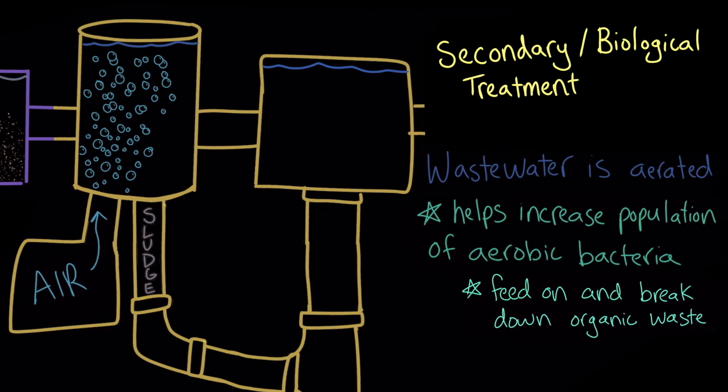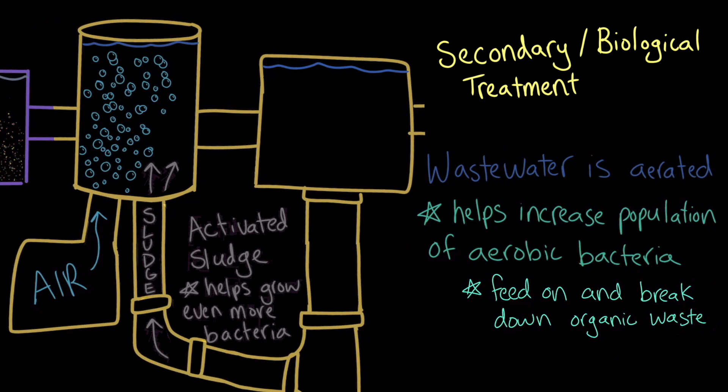Sometimes, bacteria-loaded sludge, called activated sludge, is also added to help grow even more bacteria. When the bacteria have plenty of oxygen, they metabolize the organic material into carbon dioxide, and yes, more sludge. The sludge again settles to the bottom of the tank and is collected for treatment.